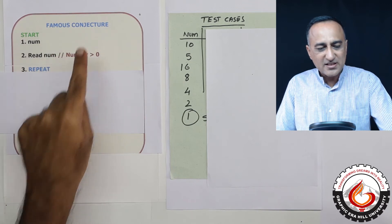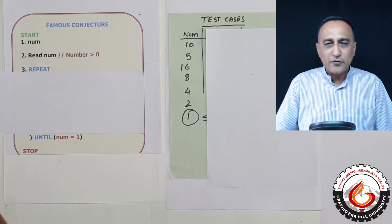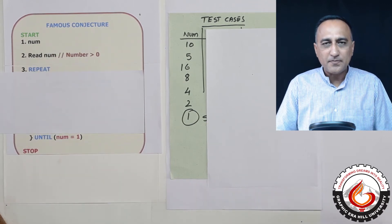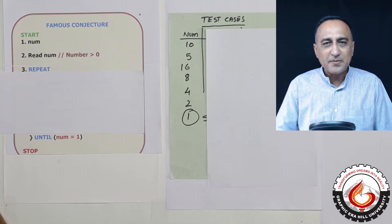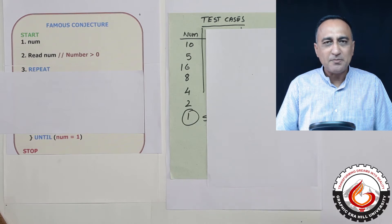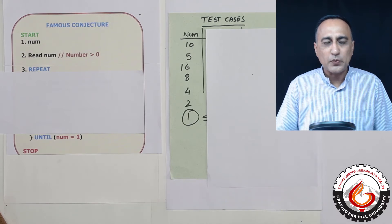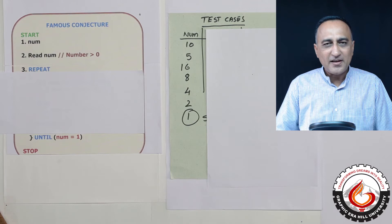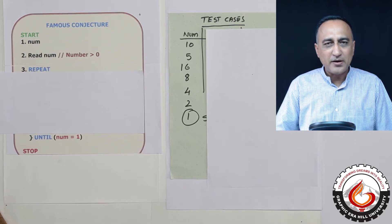A famous conjecture states that if you take an input number, if it is even, keep dividing it by 2. If it is odd, multiply that number by 3 and add 1 to it. Finally, it says every number will reach 1.